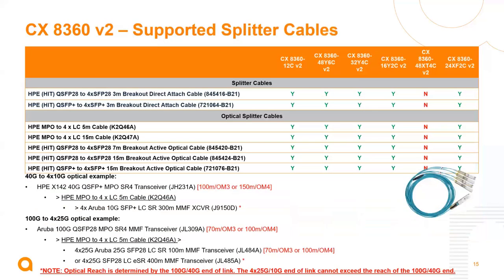Finally, a table showing the splitter cable options for these switches. We can support 4x25 gig breakout attached cables or 4x10 gig breakout attached cables. For optical splitter options, we can use MPO to 4x LC connectors in either 5-meter or 15-meter optical splitter connections, as well as HIT optical splitter cables. Again, the 48-port BaseT model does not support splitting.